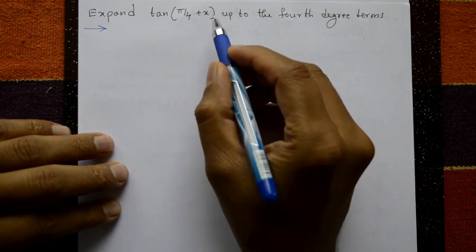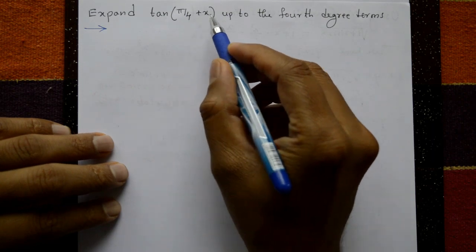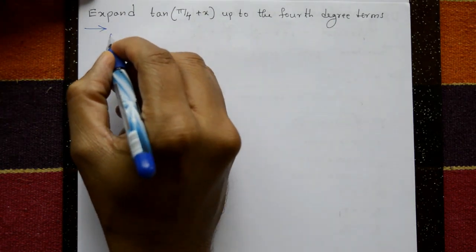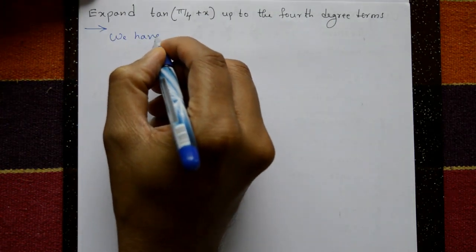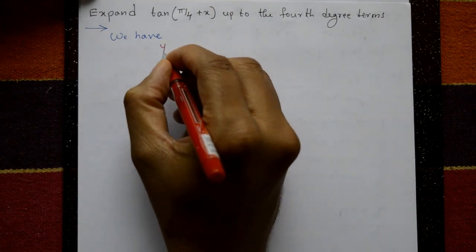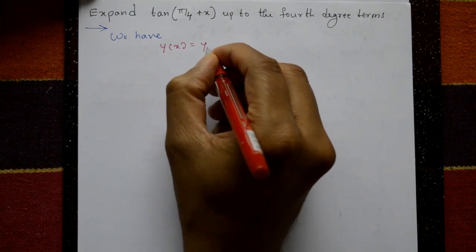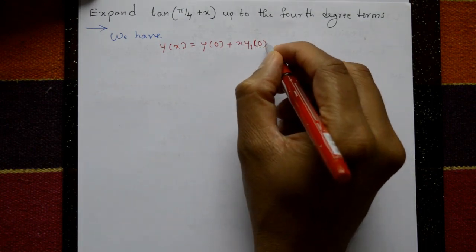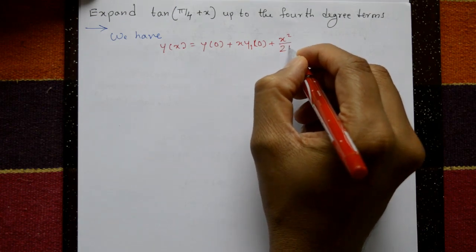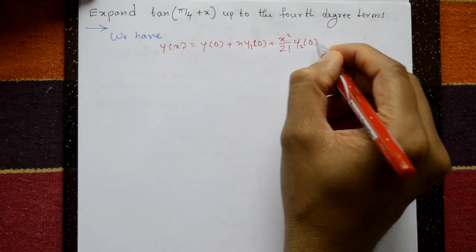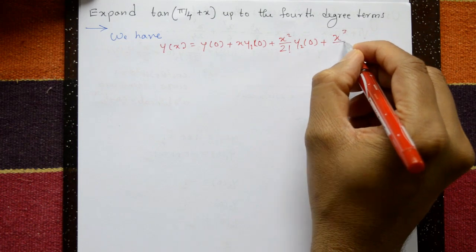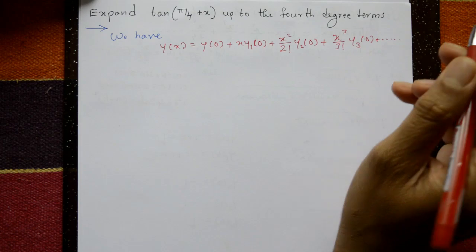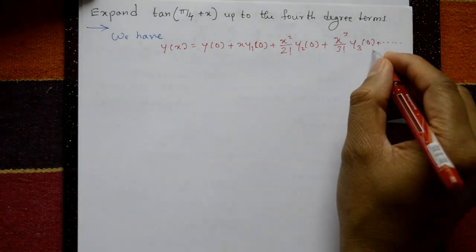Next problem: Expand tan(π/4 + x) up to the fourth degree terms. We again use the Maclaurin series: y(x) = y(0) + x·y1(0) + x²/2! · y2(0) + x³/3! · y3(0) + ... This is equation number 1.